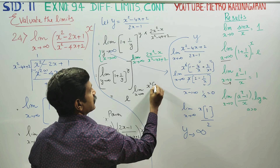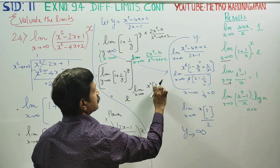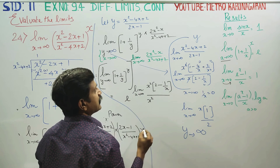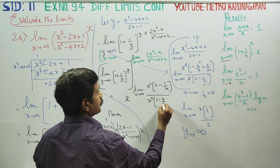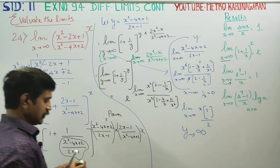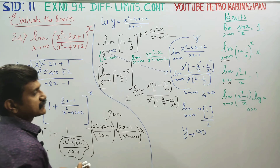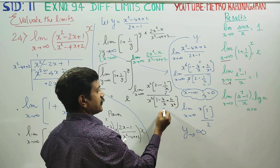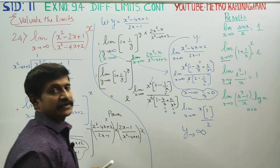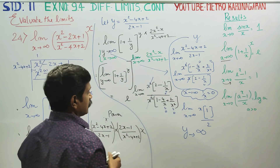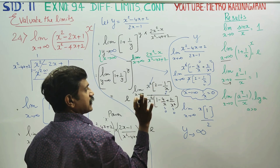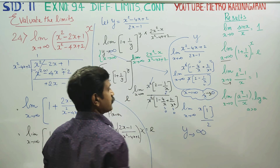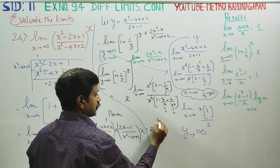x² is common. So balance is 2 minus 1/x, over 1 minus 4/x plus 2/x². As x turns to infinity, 1/x turns to 0. All terms 1/x, 4/x, 2/x² all go to 0. x² and x² cancel. Balance is 2/1. So the power equals 2 by 1, which is 2.